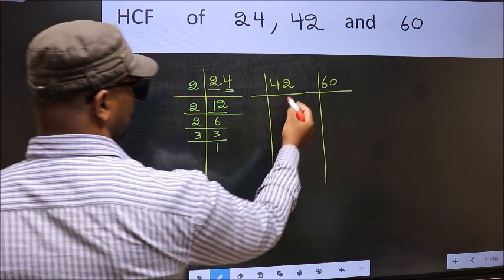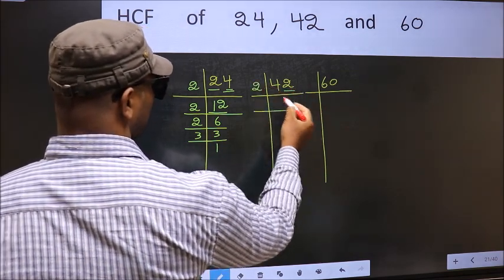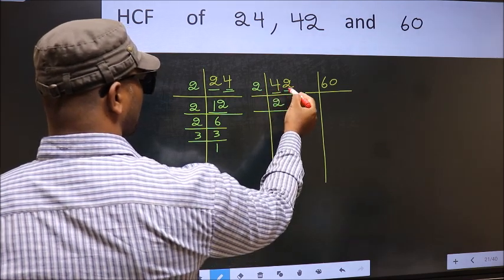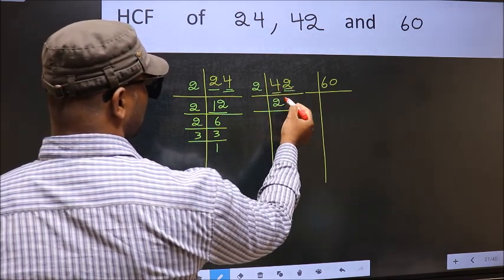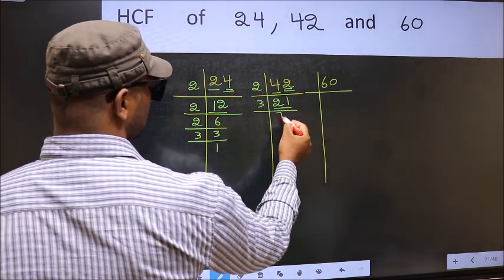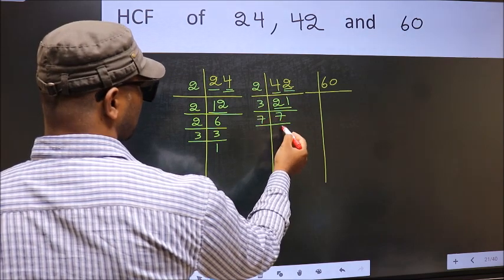Now the other number. Last digit 2, even, so take 2. First number 4—when do we get 4 in the 2 table? 2×2 is 4. The other number 2—when do we get 2 in the 2 table? 2×1 is 2. Now 21: 3×7 is 21. Now 7—7 is a prime number, so 7×1 is 7.